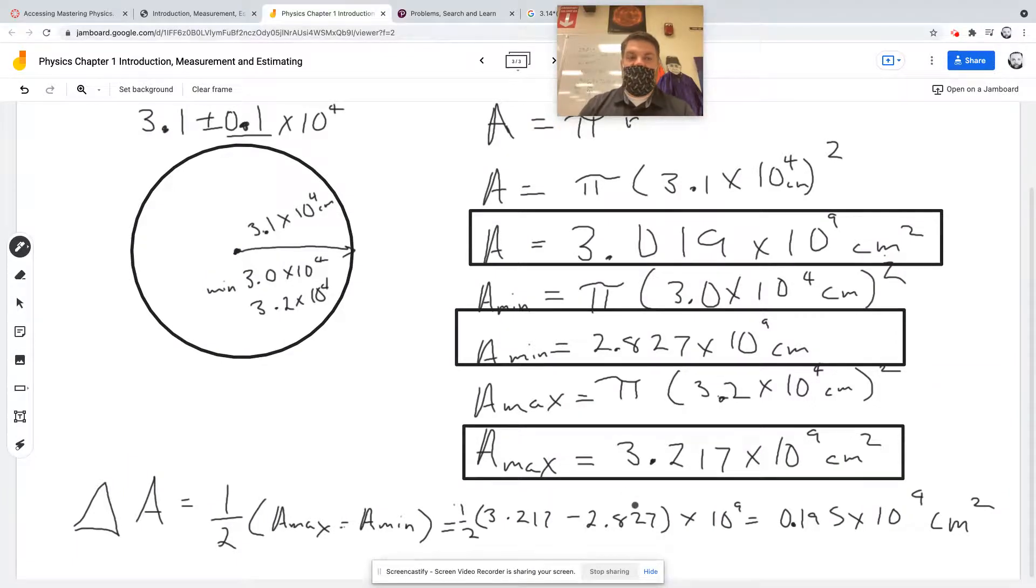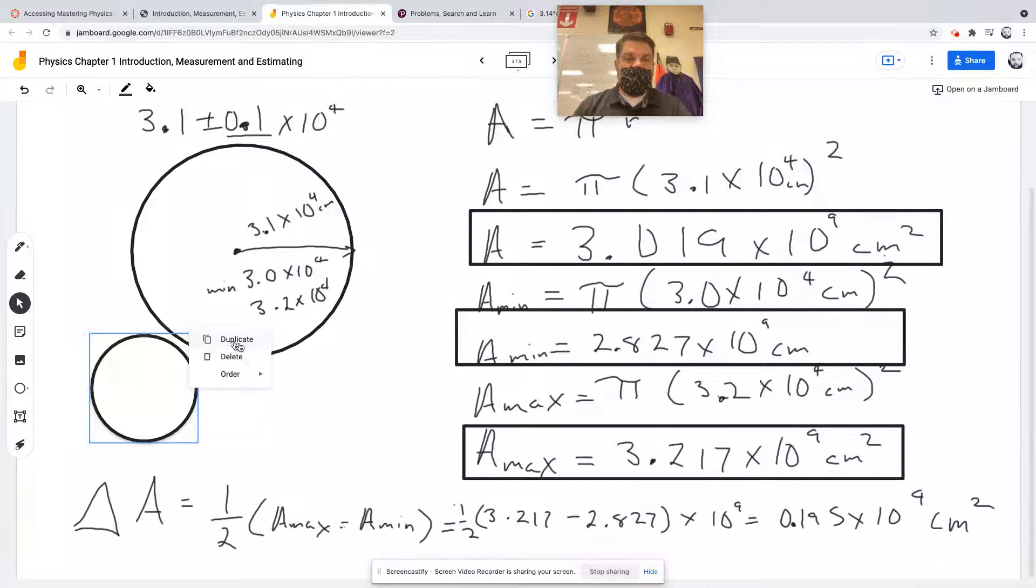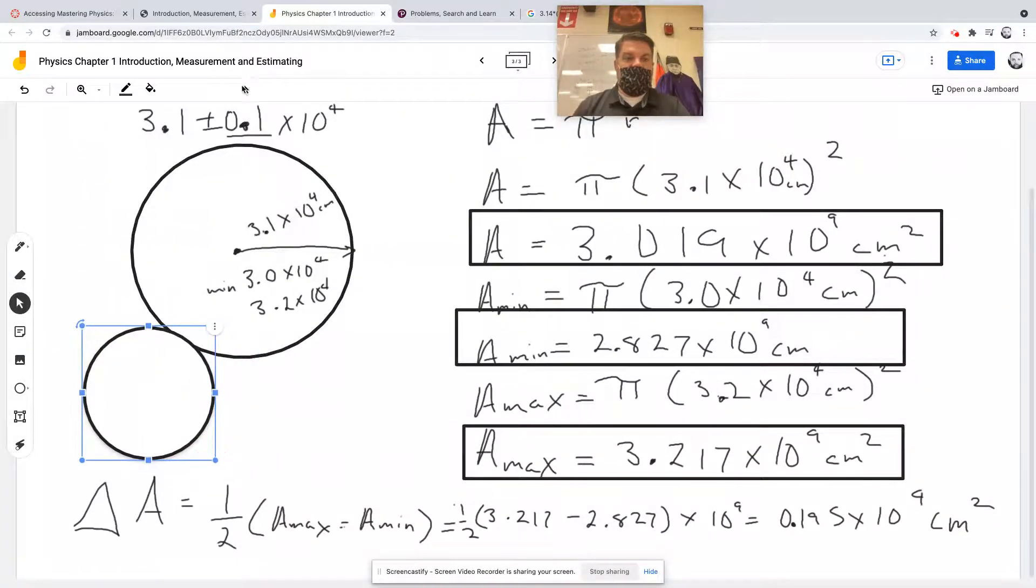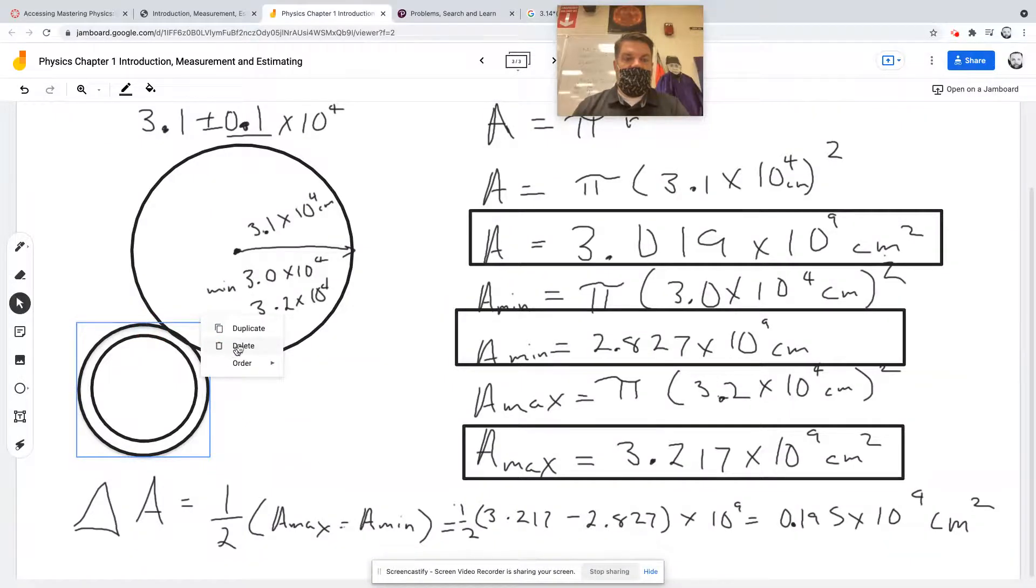Now I'll draw a diagram. We have this circle with the original radius. But there's a possibility the measurement is slightly off, so we might have a circle that's slightly bigger or slightly smaller. I'm over-exaggerating this for clarity.